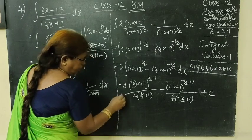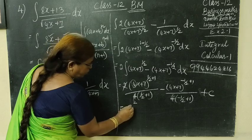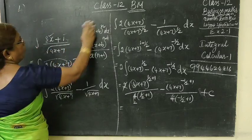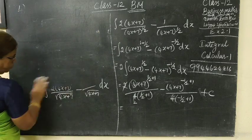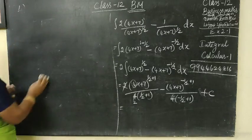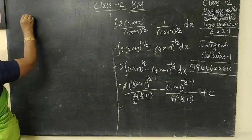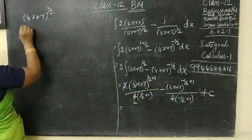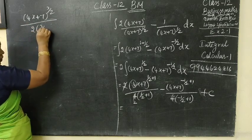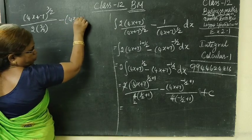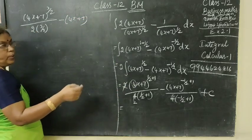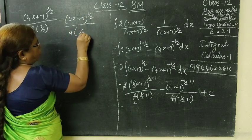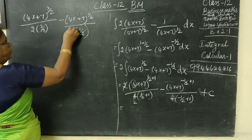So if you cancel this, 2 will apply. 4x plus 7, 3 by 2. Half plus 1 is 3 by 2, denominator 3 by 2. Then minus 4x plus 7, minus half plus 1 is plus half, by 4 bracket half. Cancel 2 times. So 4x plus 7 power 3 by 2 divided by 3, minus 4x plus 7 power half, denominator 2 plus C.